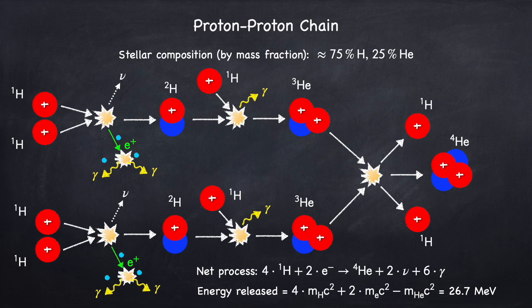So hydrogen fusion takes four protons, which are hydrogen nuclei, and converts them into one helium nucleus, or alpha particle, which is made up of two protons and two neutrons.